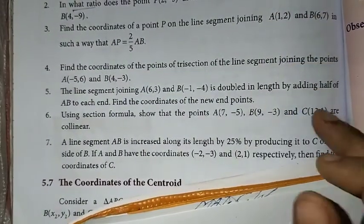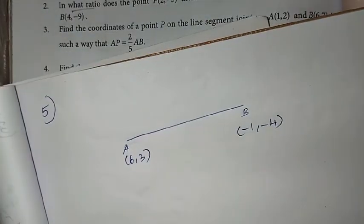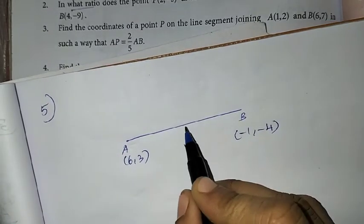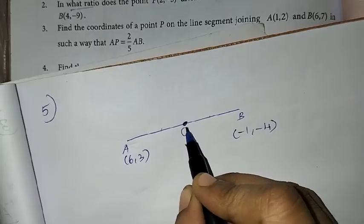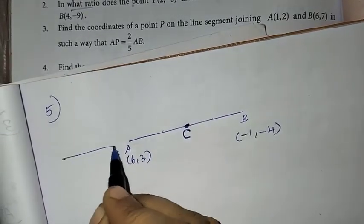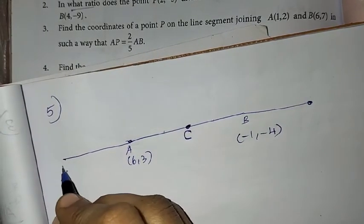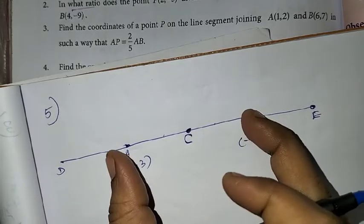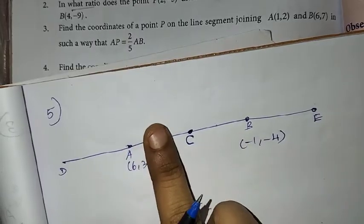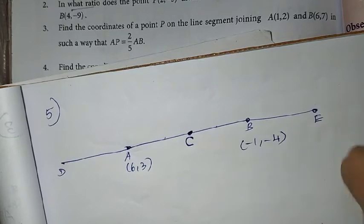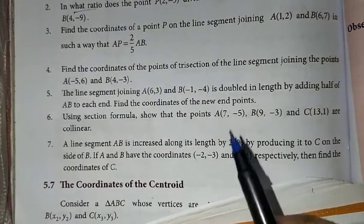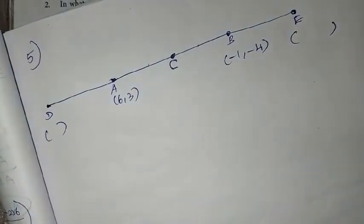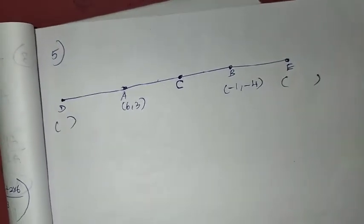The line is doubled in length by adding half of AB to each end. So the line AB is doubled. How it doubles — half of AB, meaning the midpoint, is taken. We add half to this side and half to that side, so it doubles. We take points D and E. The question asks us to find the coordinates of the new end points D and E. We will use the midpoint formula — it is easy.